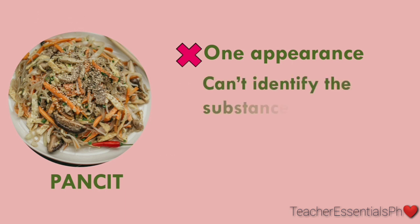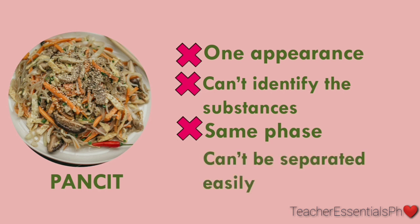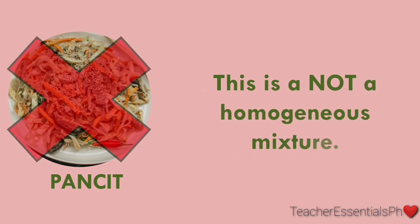Can you not identify the substances present using your naked eye? No, because we have named the substances present in here. Does it have the same face? It doesn't have the same face. Can we not separate them easily? No, we can separate them by hand-picking. There are no characteristics of a homogeneous mixture present in the pancit mixture. Therefore, this is not a homogeneous mixture.